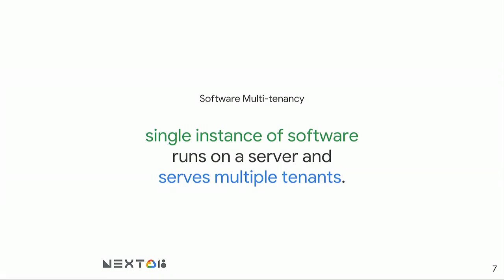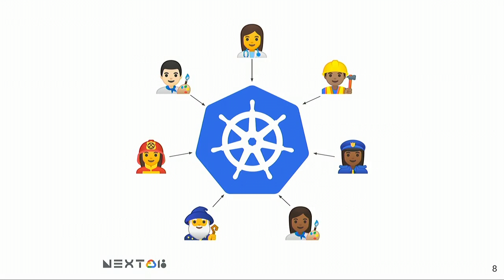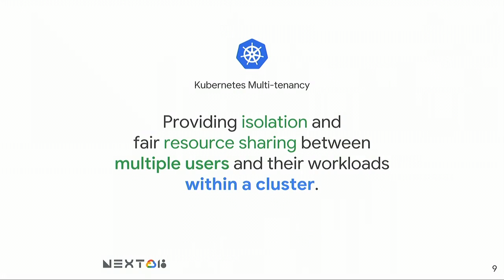What is multi-tenancy? In the software context, multi-tenancy means a single software running somewhere that serves multiple tenants. Any website you're using is probably multi-tenant software. In Kubernetes terms, multi-tenancy is providing isolation and fair resource sharing between multiple users in a single cluster.